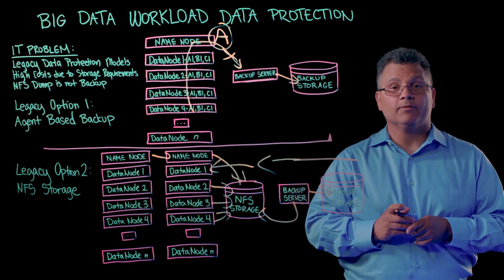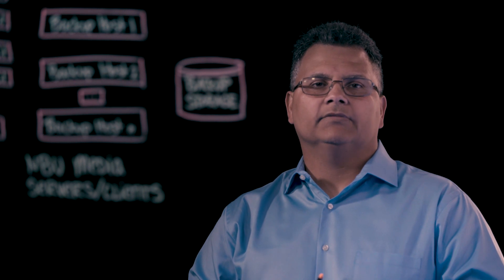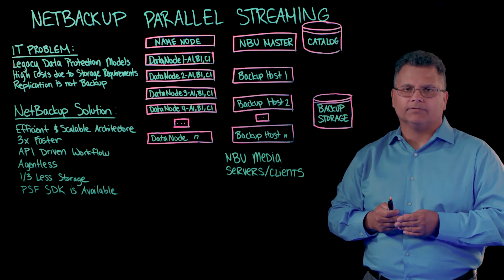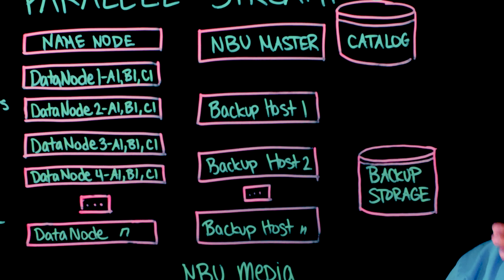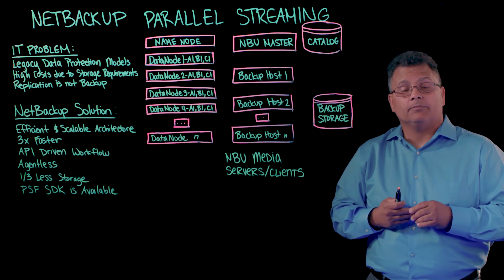Let's take a look at the Parallel Streaming Framework and see how we can solve that. We designed NetBackup Parallel Streaming Framework to solve some of the challenges mentioned earlier. It starts with the NetBackup Master Server, where we keep our catalog, do policy management and scheduling. This is where our big data policy will be used to protect the Hadoop environment. Additionally, we have Backup Hosts, which are like data movers — they process data directly from the data nodes. We can have an unlimited number of backup hosts, which gives us our scalability.